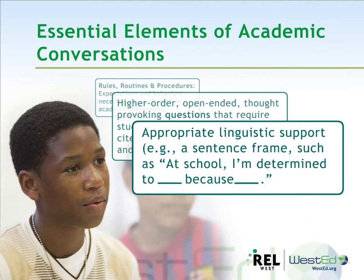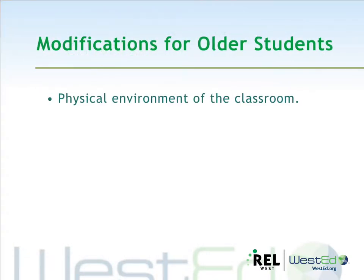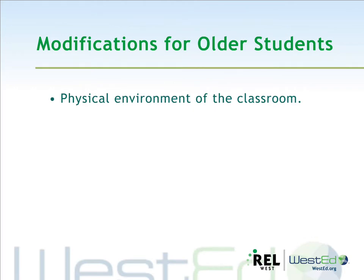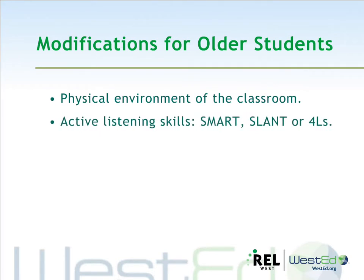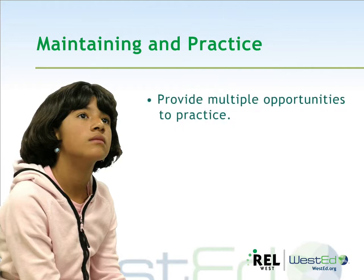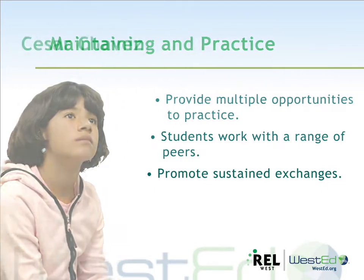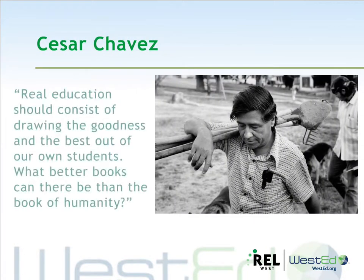This allowed all learners to feel confident about what is being shared. What modifications can be made for older students? How will you modify the seating and physical environment of the classroom to facilitate an academic conversation? What are the active listening skills you want students to practice and use? What types of questions will you ask? Students should have multiple opportunities each day to engage in academic conversations about texts with a range of peers. Some conversations will be brief and others will involve multiple exchanges. I want to leave you with a quote from Cesar Chavez: 'Real education should consist of drawing the goodness and the best out of our own students. What better books can there be than the Book of Humanity?' Thank you so much.